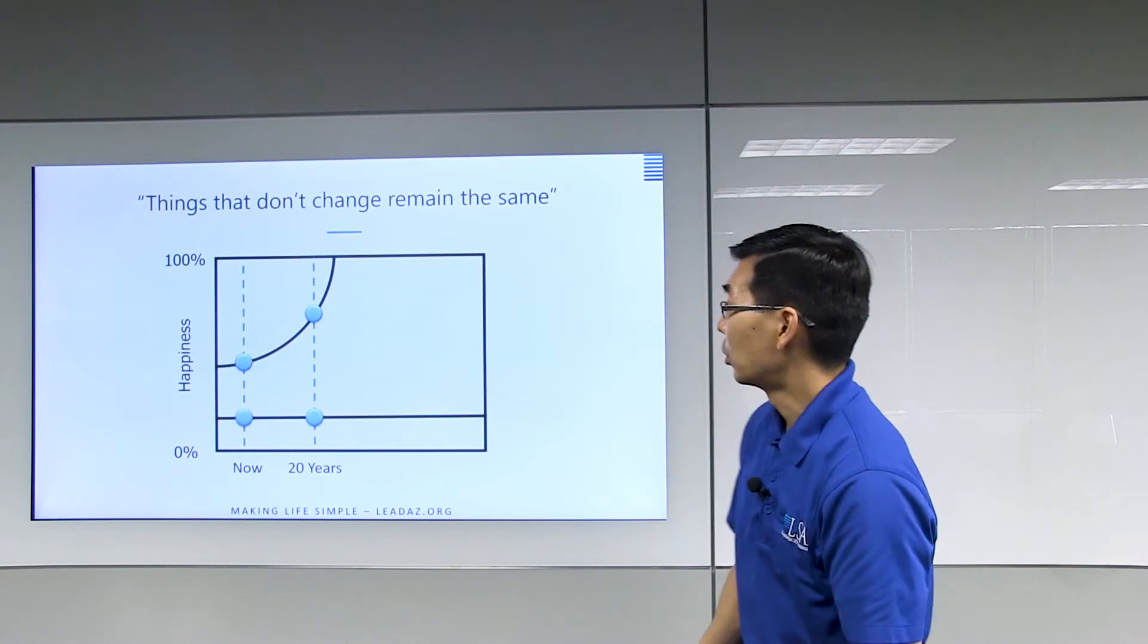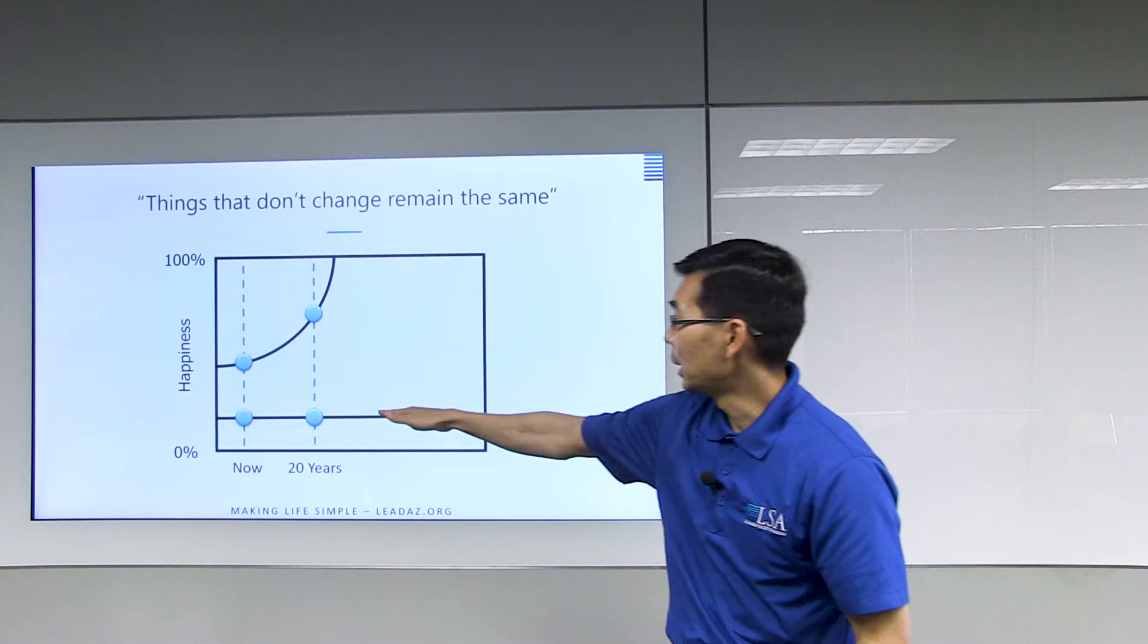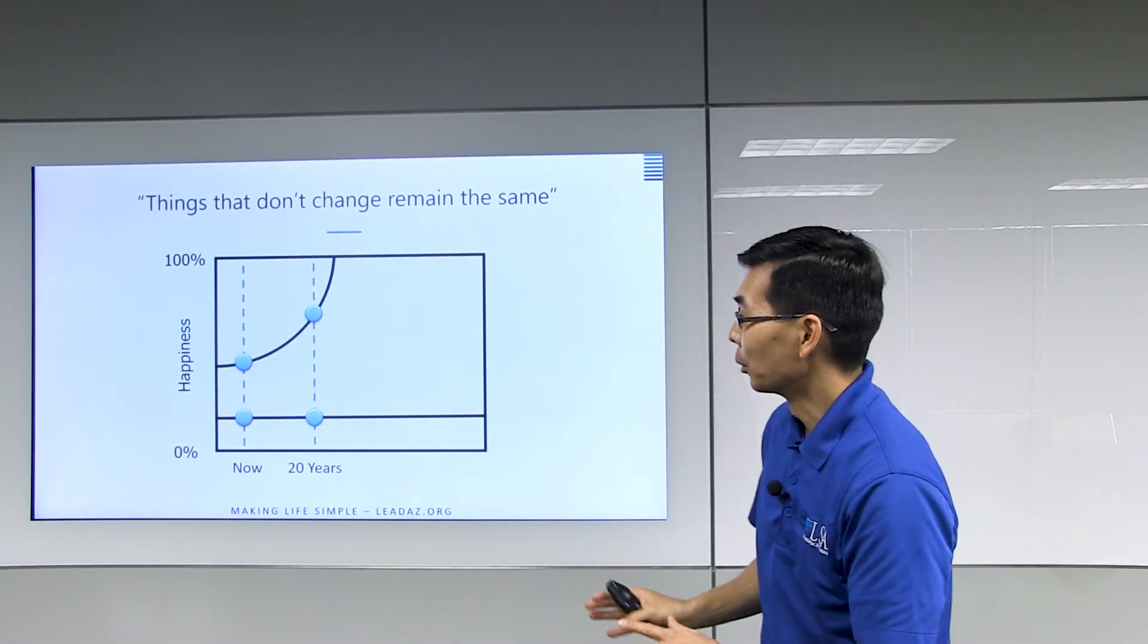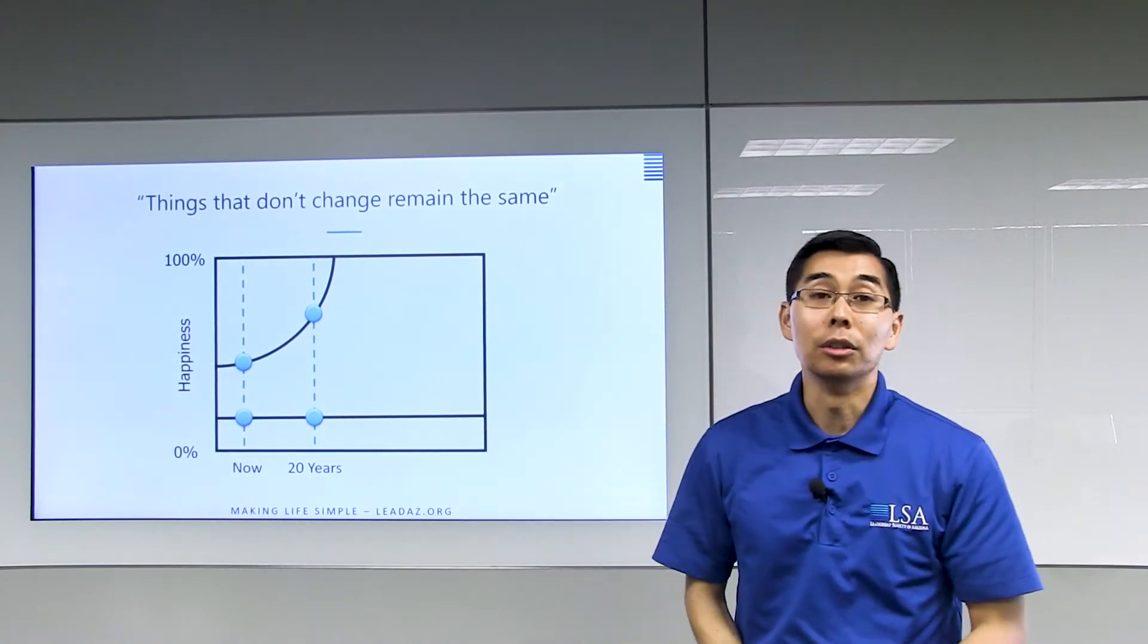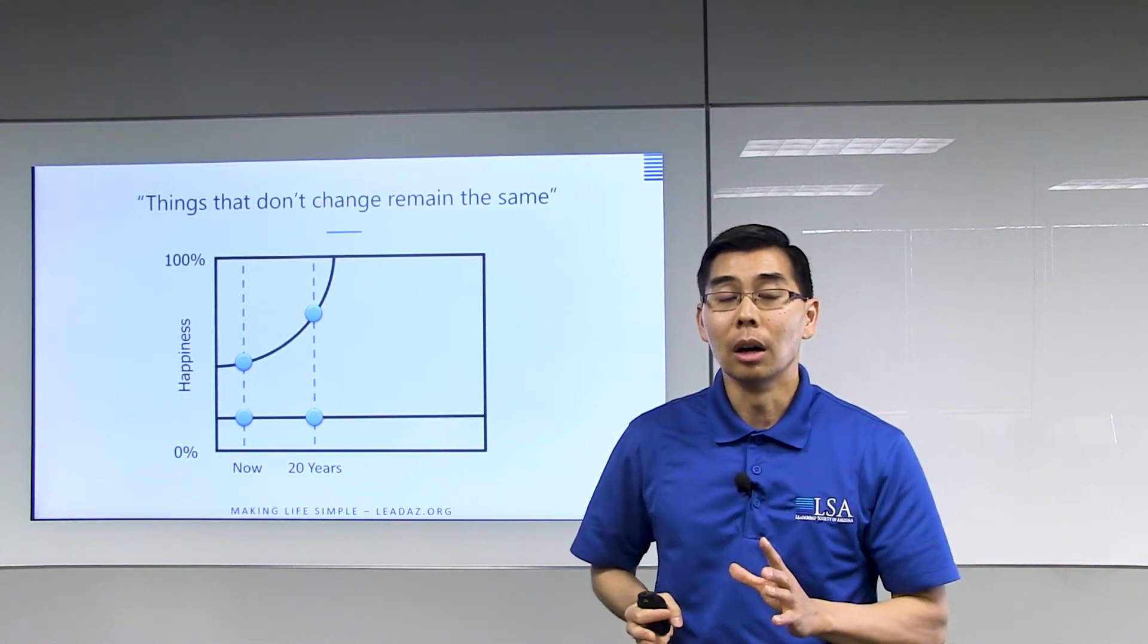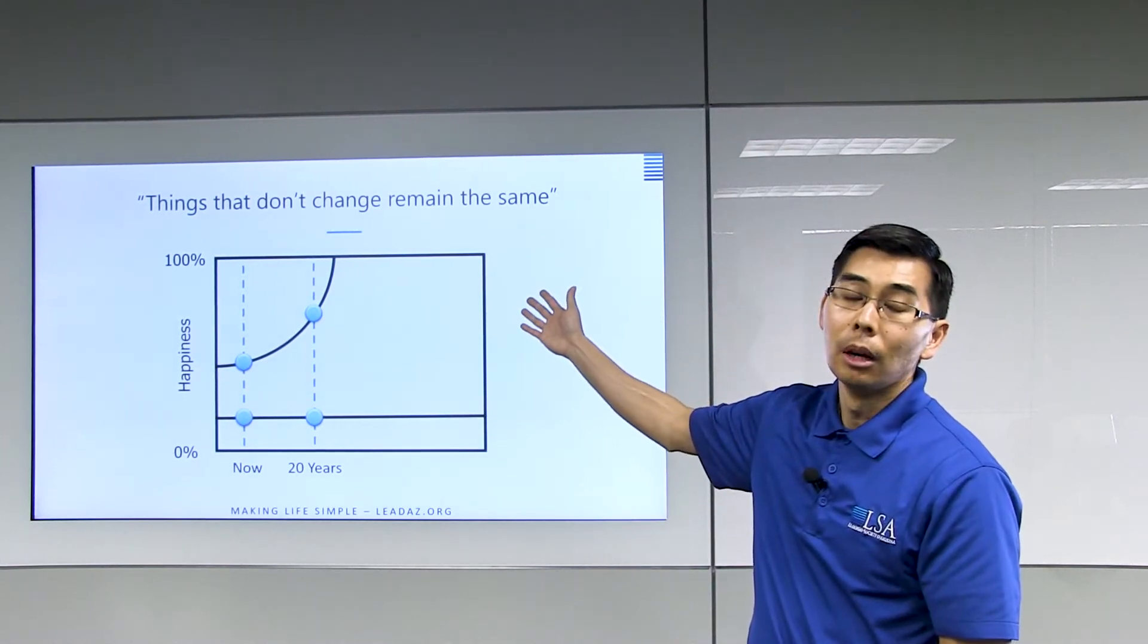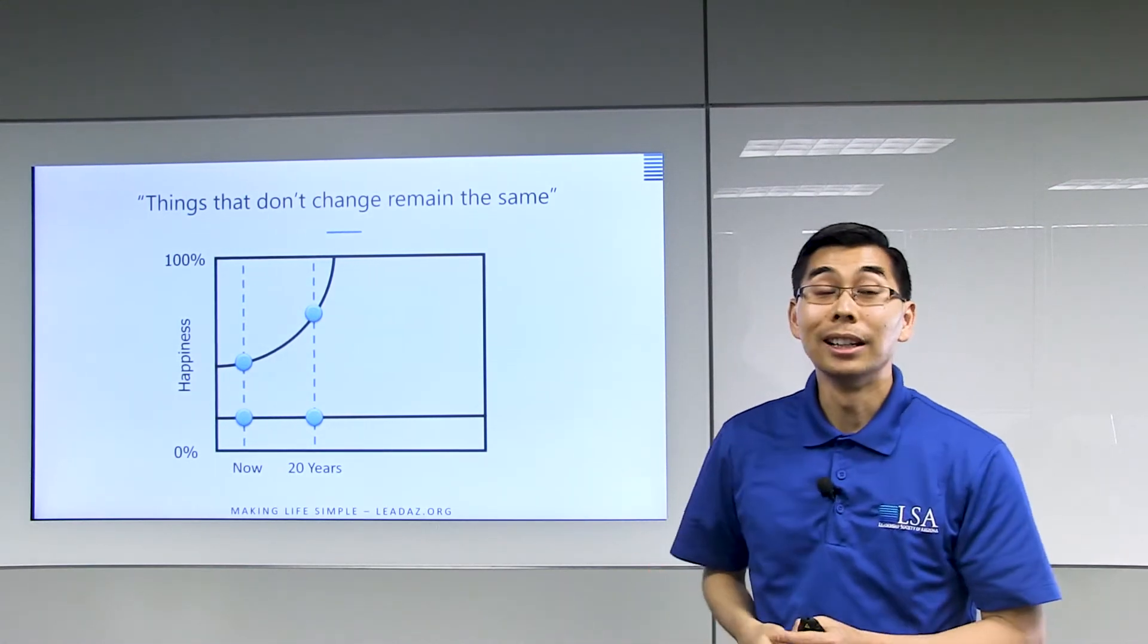The only way you can increase your success, the only way you can increase your happiness is instead of being like the bottom line, you have to be like the top line. You have to change, you have to improve. Or in other words, only if you change can you be like the top line. And if you don't, you stay like the bottom line, and this is the crux of what education is really supposed to do. It's supposed to teach students how to increase their happiness over time, but the only way to do that is to get them to learn, to grow, to change.